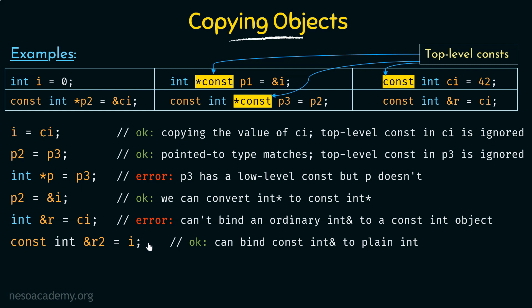The main thing to remember is when dealing with pointers, we have top-level constants and low-level constants. We can have them separately and even together in the same definition. While copying objects, top-level constants are ignored, and we have to check if the low-level constant qualifications match — only if they match, or if a conversion can take place to make them match, can the copying happen. I hope you have understood what are top-level and low-level constants, how they differ, how to tell them apart, and how they work while copying objects.